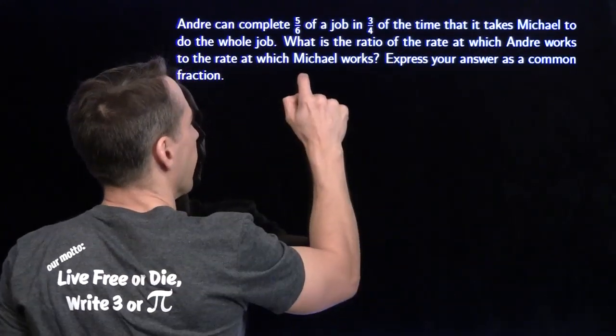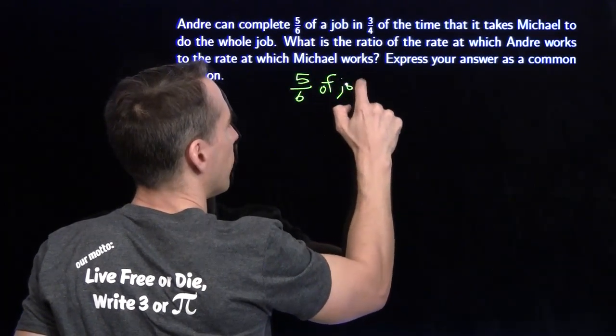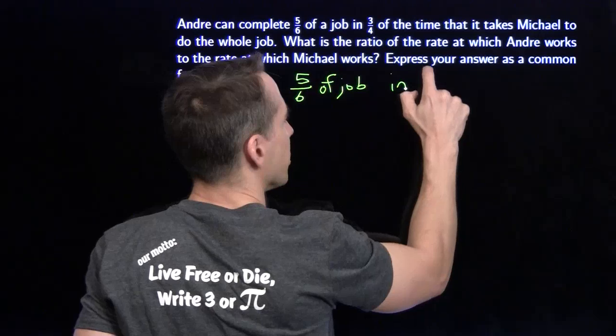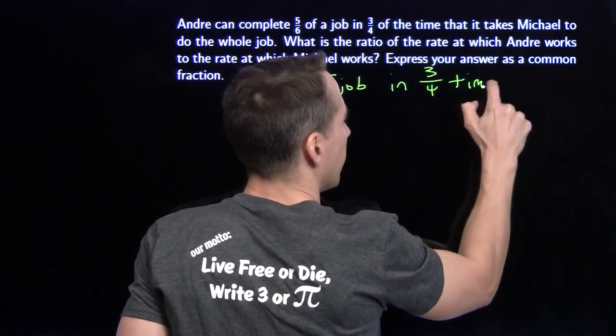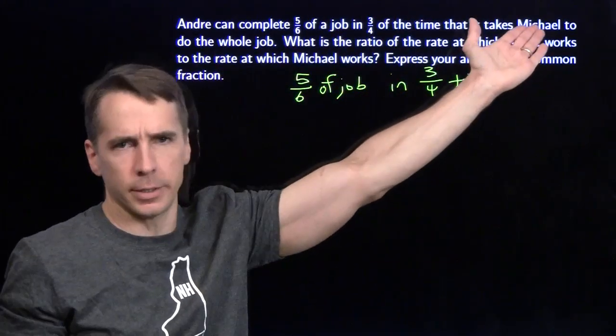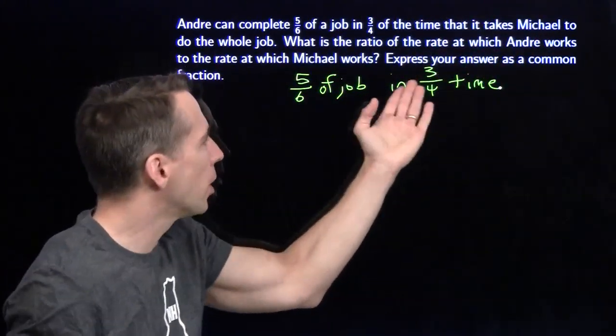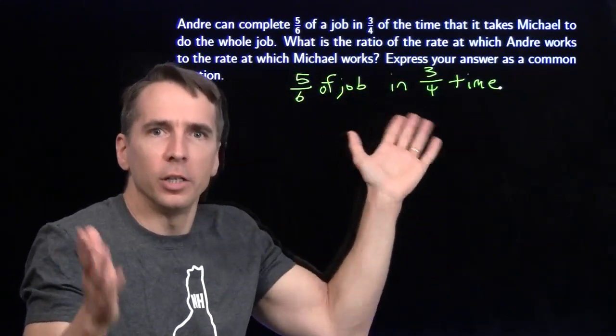That'll let me compare the rate that Andre works to the rate that Michael works. So here's what I know. I know that Andre can do 5 sixths of a job in 3 quarters of the time. But what I want to do is compare. I want to see what Andre can do in the same amount of time as Michael. I want how much of the job in 1 unit of time.